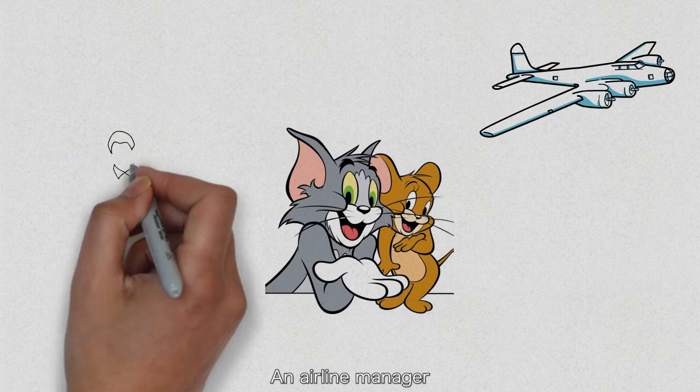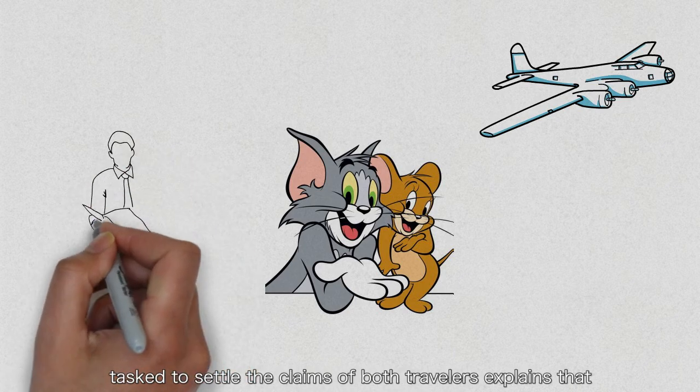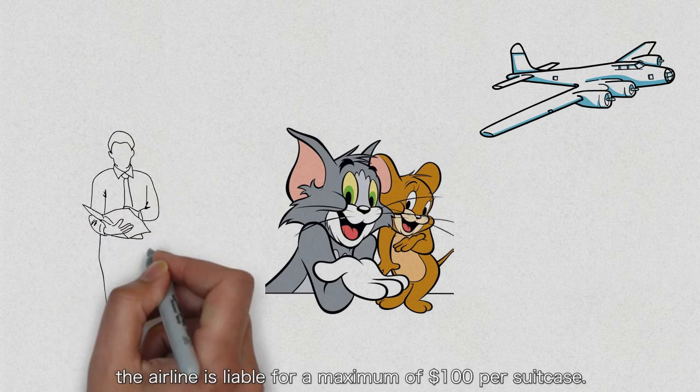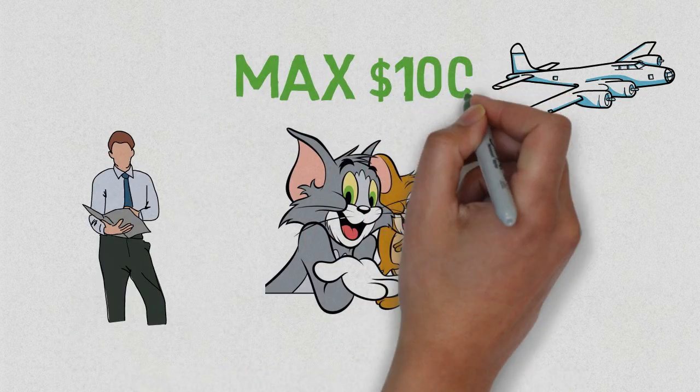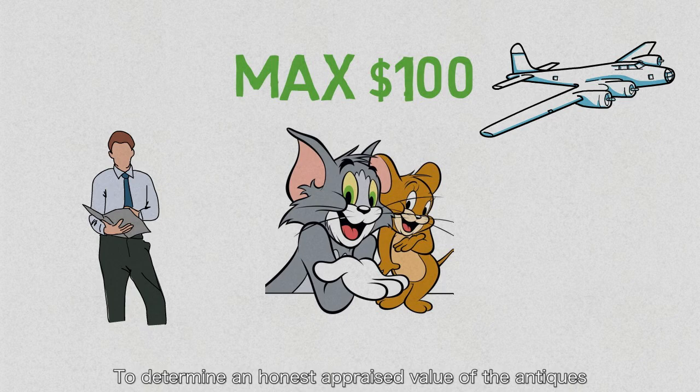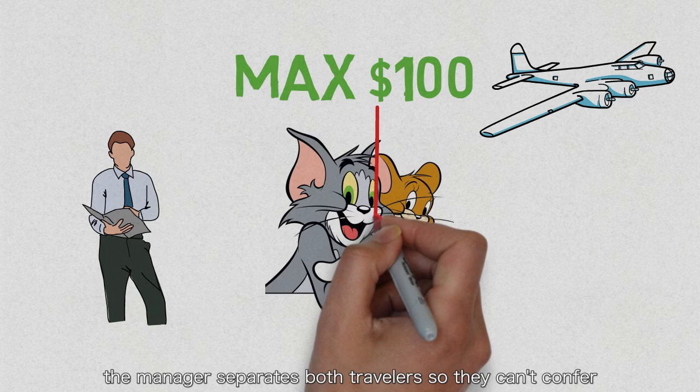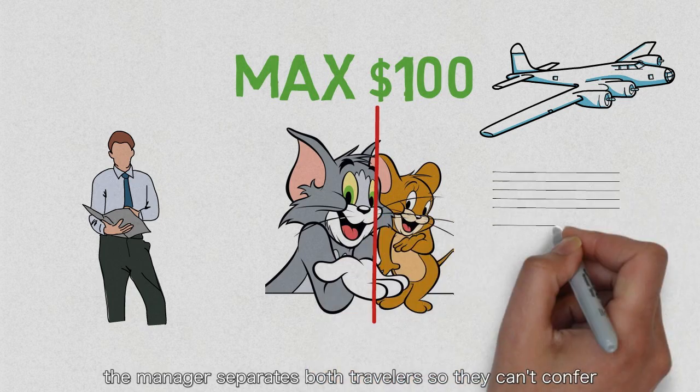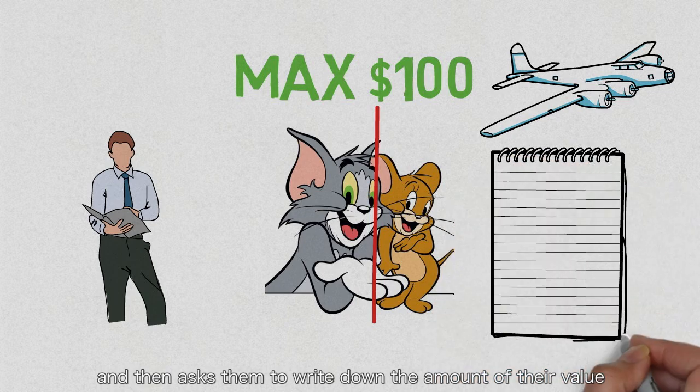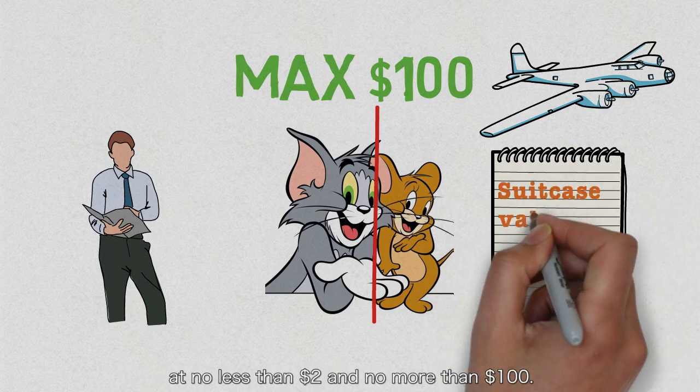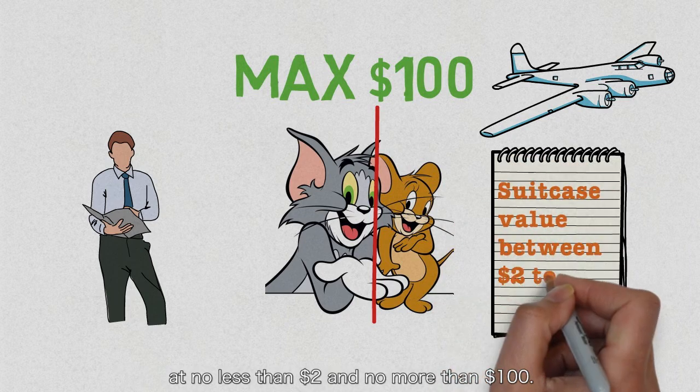An airline manager texts to settle the claim of both travelers, explaining that the airline is liable for a maximum of a hundred dollars per suitcase. To determine an honest appraised value of the antiques, the manager separates both travelers so they cannot confer, and then asks them to write down the amount of their value at no less than two dollars and no more than a hundred dollars.